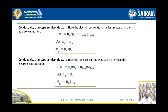Looking at conductivity of n-type semiconductors: here the electron concentration is far greater than that of hole concentration. Therefore, sigma is equal to Ne times E times mu_E plus Nh times E times mu_H. As Ne is greater than Nh, we can write sigma_E is equal to Ne times mu_E times E.